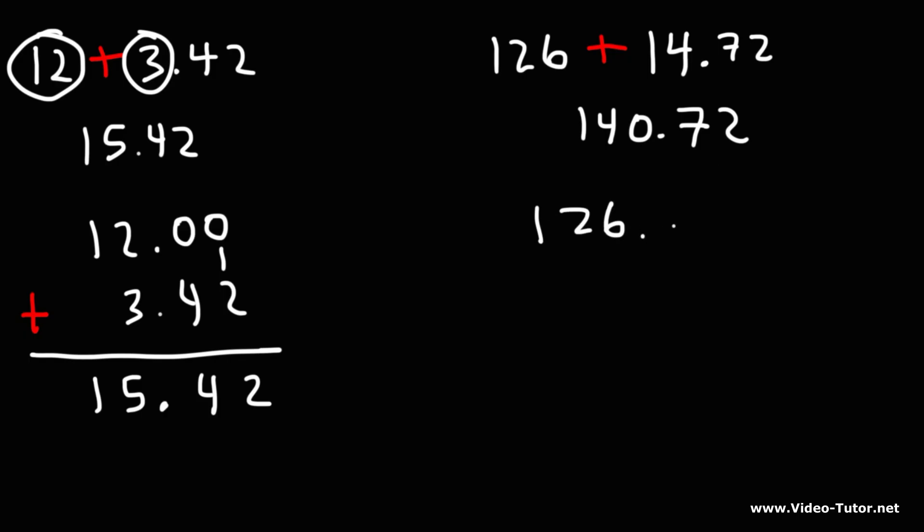For the last example, we have 126, which is the same as 126.00. And below that, we'll put 14.72 right beneath that. Now let's add. So here we have 0 plus 2, which is 2. 0 plus 7, that's going to be 7.